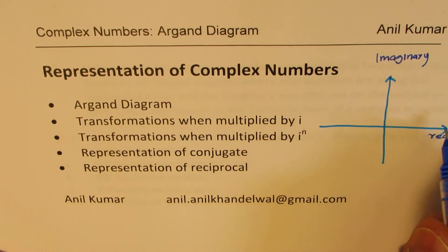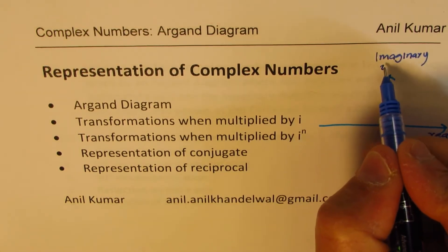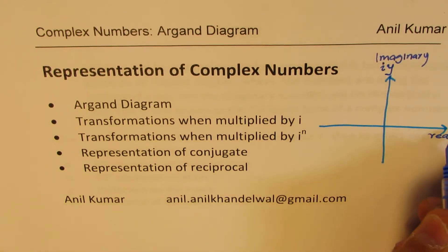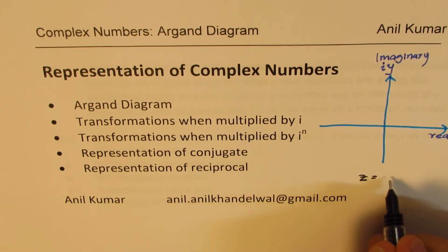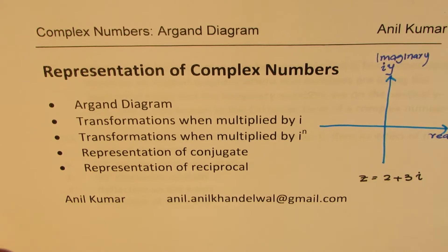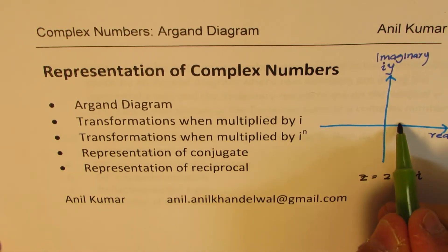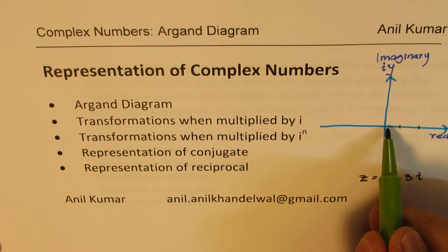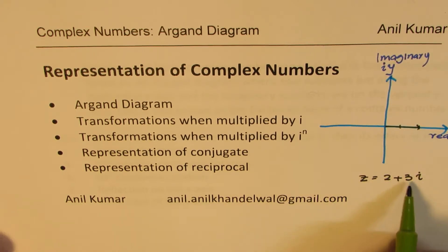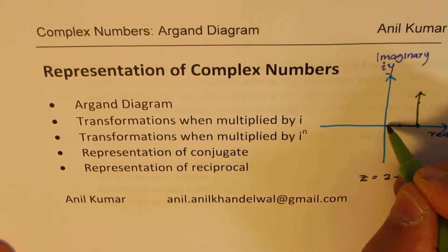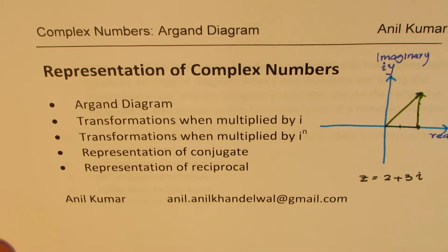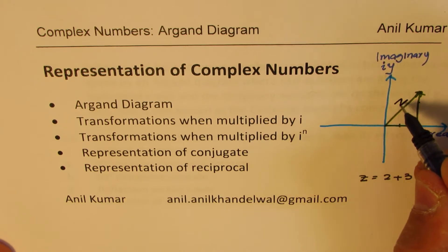To correlate it with our x-y coordinate system, we may write i times y here and x there. That is how we represent them. If I have a complex number, let us say z, which is equal to 2 plus 3i, we're taking a very simple example. In that case, 2 is the real part, so the number 2 will be represented along the horizontal x-axis, and then 3i will go vertically up 3 units. The resultant will be represented by z — that becomes the complex number z.